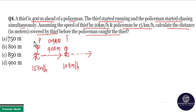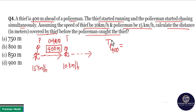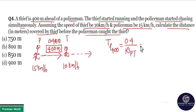The time taken by the police to catch the thief is the same as the time taken to cover the 400-meter gap, calculated using relative speed. So time taken = 0.4 divided by the relative speed of police and thief.